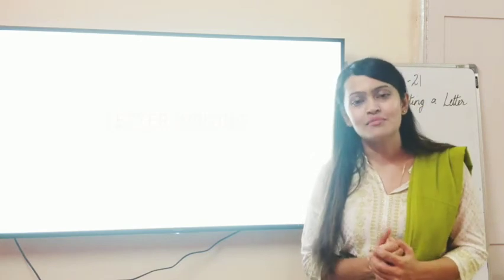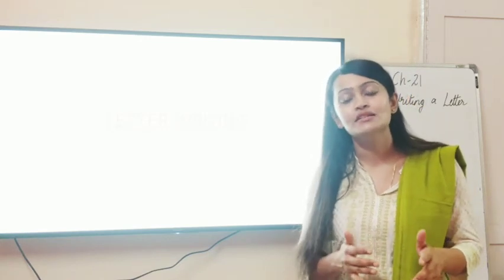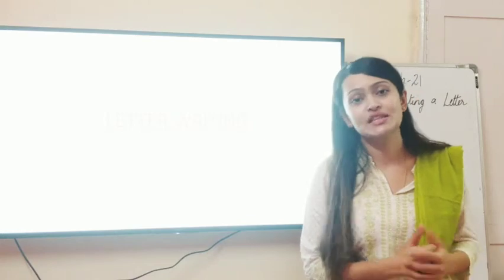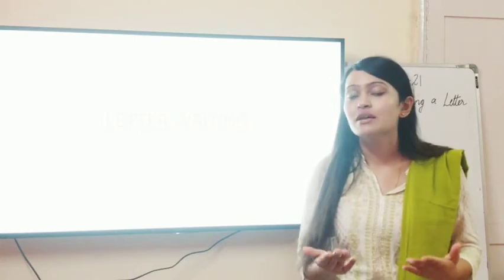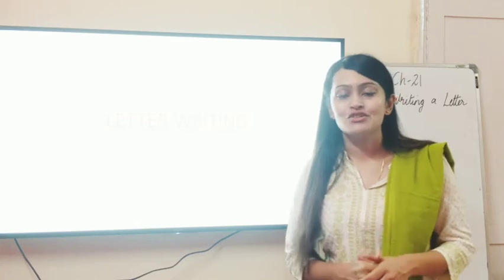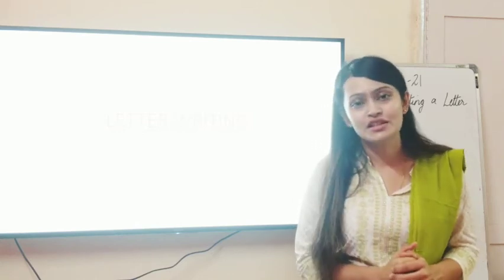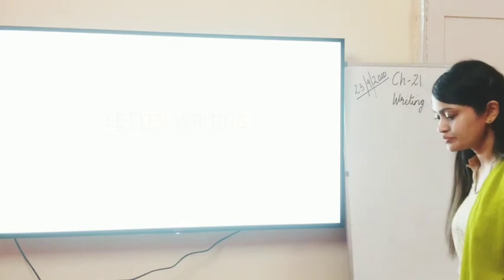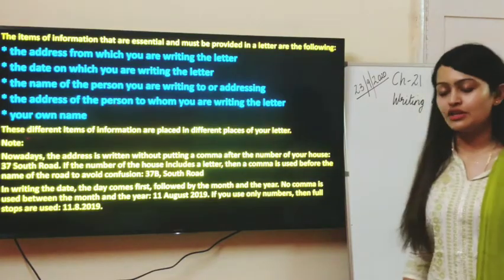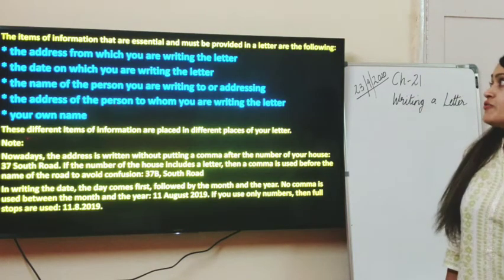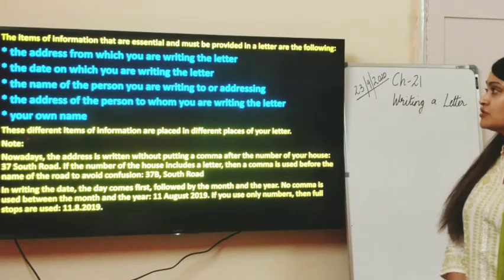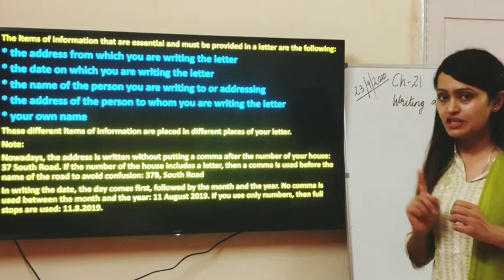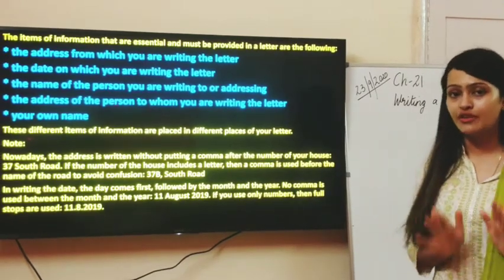Sometimes you address a letter to your loved one. Sometimes you write an informal letter to someone who's just an acquaintance, not a close person. And sometimes you write a very formal letter. So what are the points of consideration we will be looking into? The items of information that are essential and must be provided in a letter are as follows — these are the points we need to remember, and they are very important.